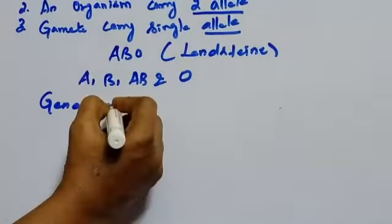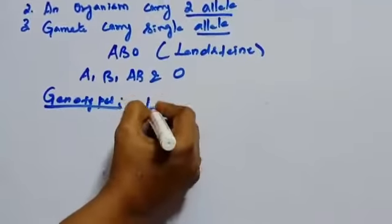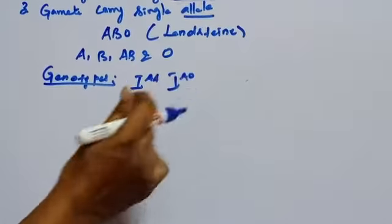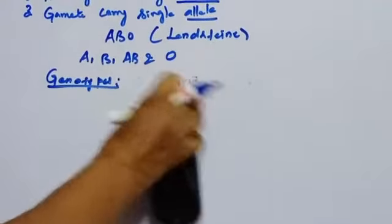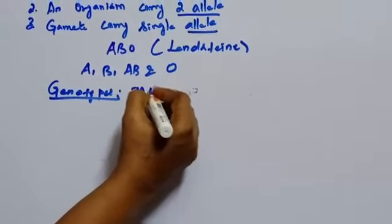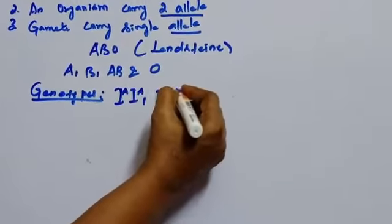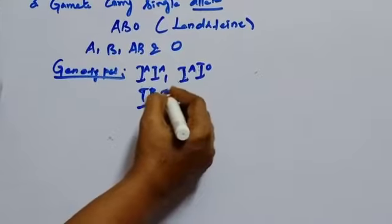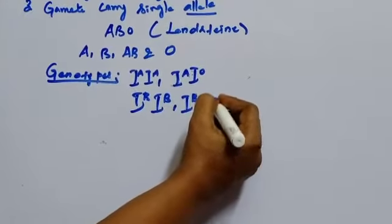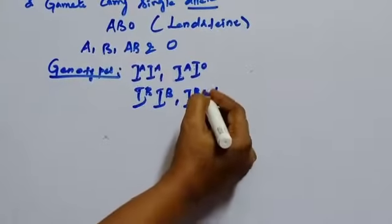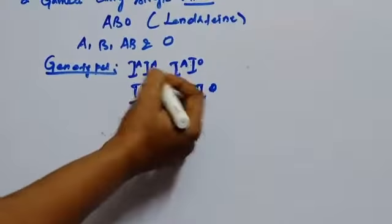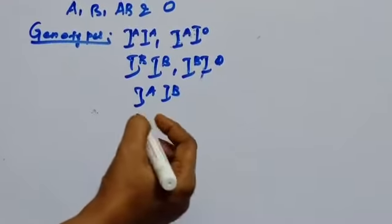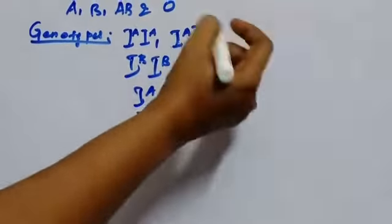I'll write the genotypes here. The genotypes are IA IA, IA IO, IB IB, IB IO, IA IB, and IO IO. These are the six genotypes.